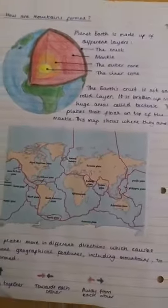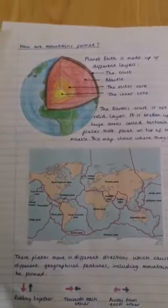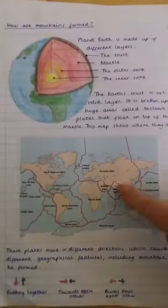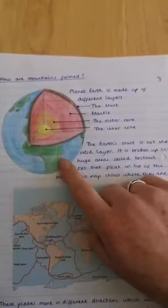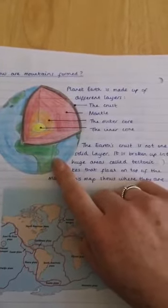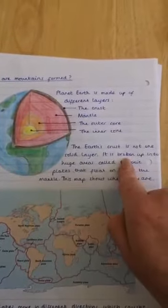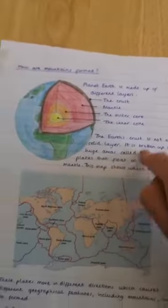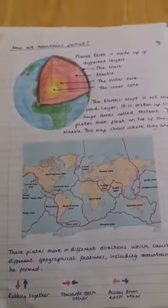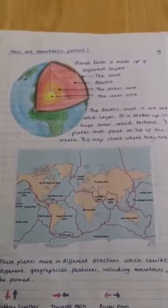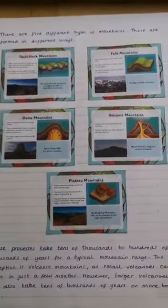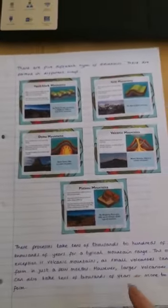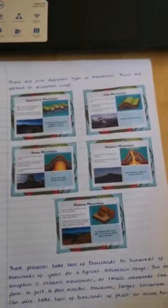Following on from that, I looked at how mountains are formed. I've done a combination of printing off diagrams from the internet and drawing some of my own diagrams as well, whilst explaining them in my own sentences — looking at different types of mountains and how those types of mountains are formed.